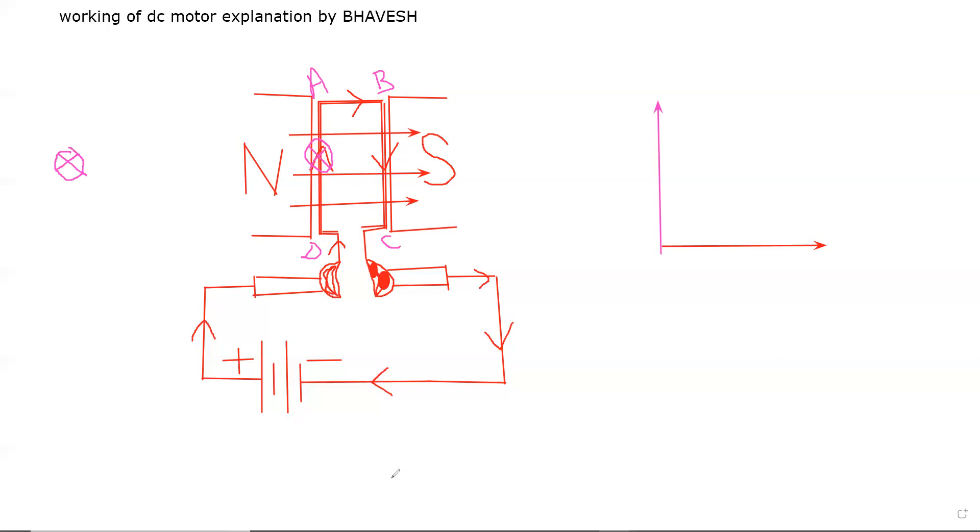If we talk about BC, the magnetic field direction is from North to South. The current direction is in this direction. By using the right-hand palm rule, we will know that BC is outward.